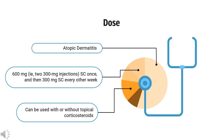Severe chronic rhinosinusitis with nasal polyps (CRSwNP): Indicated as add-on maintenance treatment — 300 mg subcutaneously every 2 weeks. Eosinophilic esophagitis: Indicated for eosinophilic esophagitis — 300 mg subcutaneously every 2 weeks. Prurigo nodularis (PN): Indicated for treatment of prurigo nodularis — 600 mg subcutaneously once, followed by 300 mg every 2 weeks.